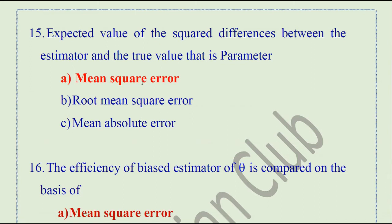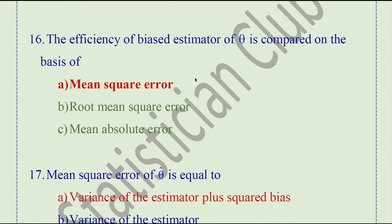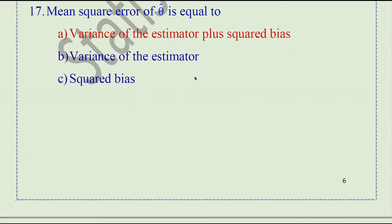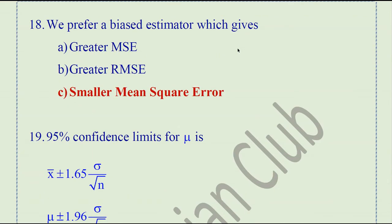Question number 15. The expected value of the squared difference between an estimator and the true value of the parameter is the mean square error. The efficiency of a biased estimator of theta is compared on the basis of mean square error. The mean square error of theta-hat equals the variance of the estimator plus the squared bias. Among biased estimators, we prefer the one which gives the smaller mean square error.